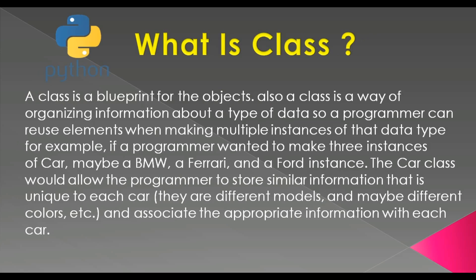What is a class? A class is a blueprint for objects. A class is also a way of organizing information about a type of data so that a programmer can reuse elements when making multiple instances of that data type. For example, if you are a programmer and you have a class called Car, and you want to create three instances of the car — maybe a BMW, a Ferrari, or a Ford — each instance can have different values, for example different models or different colors.